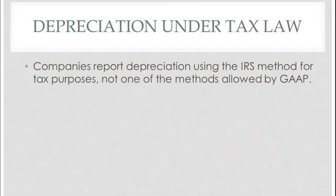Companies are required when they file their tax return to use the IRS method of recording depreciation. They don't get to use straight line, sum of the digits, or units of production method that they use under U.S. GAAP. Now, it's pretty close to the double declining balance method, but there are a few differences, and here they are.